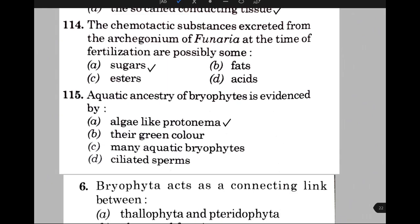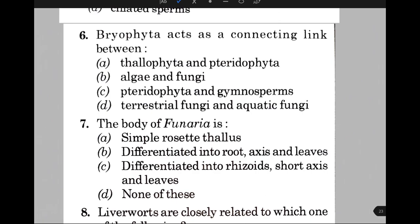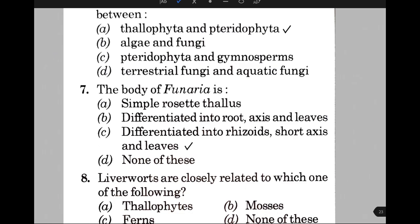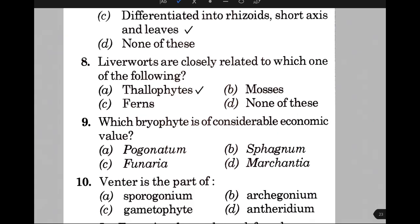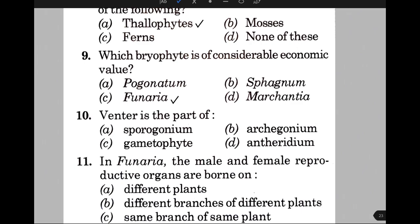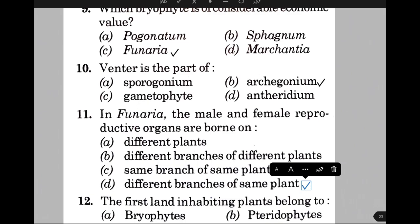Bryophyta acts as a connecting link between — the answer is option A, that is Thallophyta and Pteridophyta. The body of Funaria is — the answer is option C, differentiated into rhizoids, caulaxis, and leaves. Liverworts are closely related to — the answer is option A, that is thallophytes. Which bryophyte is of considerable economic value? The answer is option C, that is Funaria. Venter is the part of — the answer is option B, that is archegonium. In Funaria, the male and female reproductive organs are borne on — the answer is D, different branches of the same plant. The first land-inhabiting plants belong to — the answer is A, that is bryophytes.